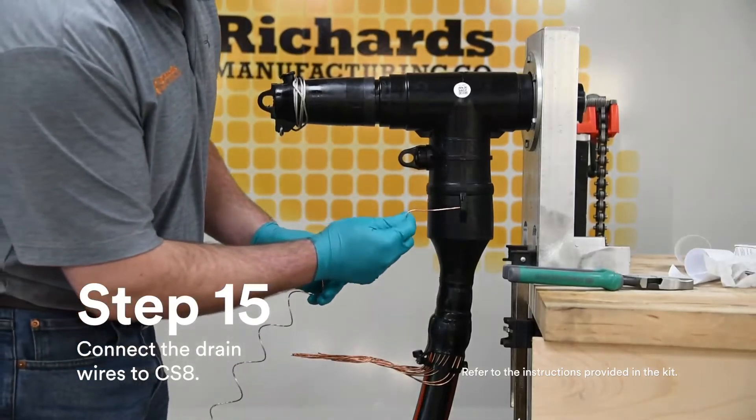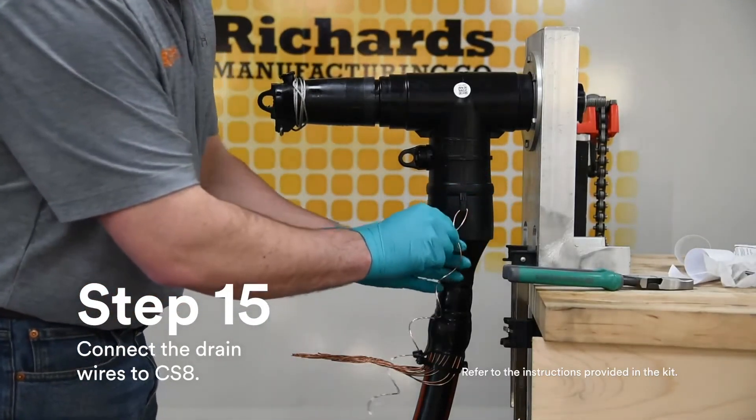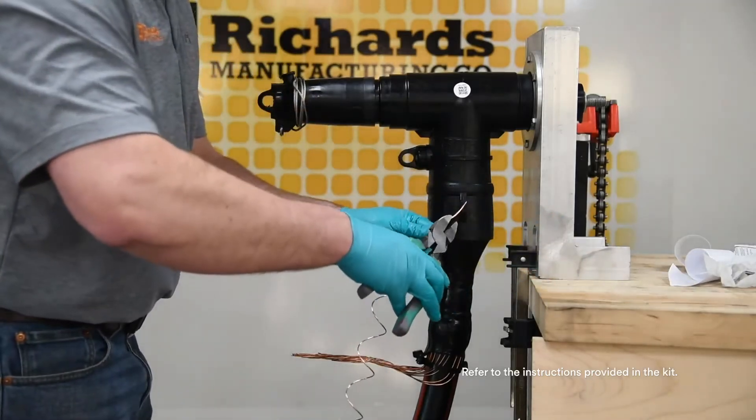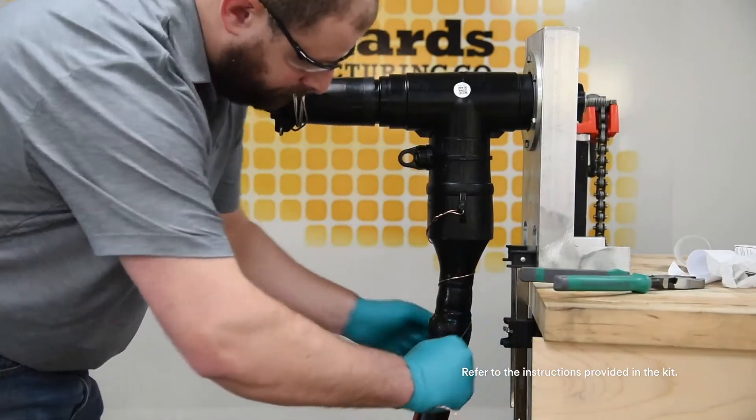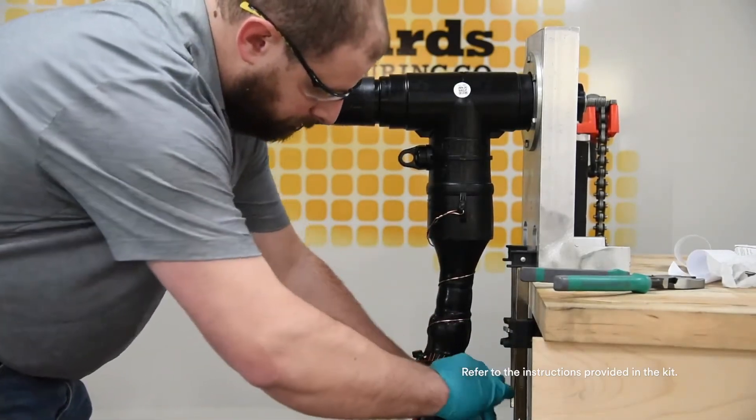Install a bleeder wire into one of the available grounding eyes on the CS8. Ground the metallic shield of the cable according to appropriate or approved practice.